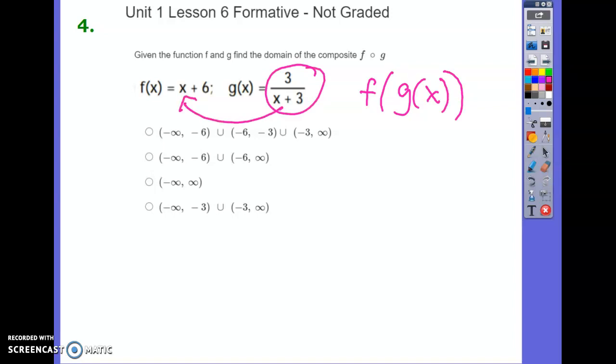So right away, we know that x cannot be negative 3. That's one of the values that we're going to have to take out of our domain. We're starting with all real numbers. We've got to pull out negative 3. Negative 3 isn't going to work.